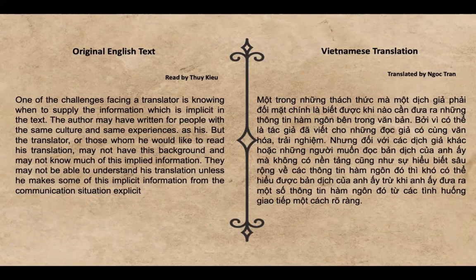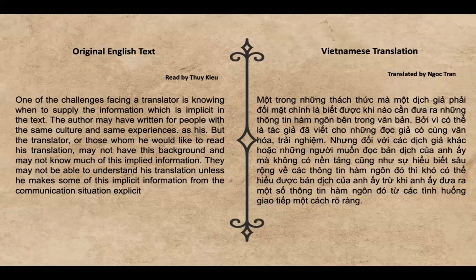One of the challenges facing the translator is knowing when to supply information that is implicit in the text. The author may have written for people with the same culture and background as his, but the translator or those whom he would like to reach may not have this background and may not know much of this implied information. They may not be able to understand the translation unless he makes some of this implicit information from the communication situation explicit.